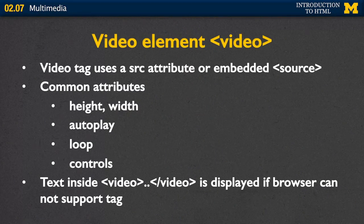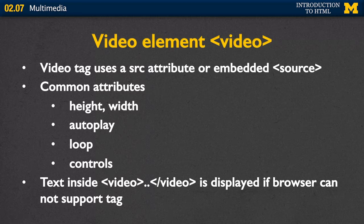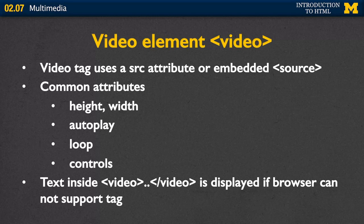So let's start with the video element. The video tag uses a source attribute very similar to the image attribute — you tell the browser where the file is. You can also use embedded source tags, where you might have the video tag and then multiple sources below. There are a number of widely-used attributes. Height and width are pretty self-explanatory — how big would you like your video to appear in the browser? Autoplay dictates whether or not the video should start as soon as you load the page. Loop will allow the video to play over and over. And controls is something you can add to give the person more control over when to stop and start the video.